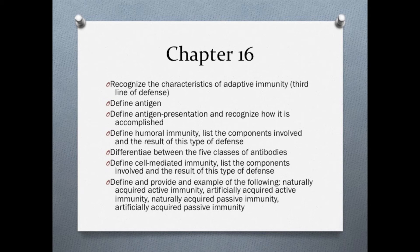Work through both humoral and cell-mediated immunity and summarize them in your own words. This greatly helps students to be able to remember the components and their functions. Students should be able to differentiate between the functions of the five classes of antibodies: IgG, IgM, IgA, IgE, and IgD. You can see pages 471 and 473 in your textbook for more information on the five classes.